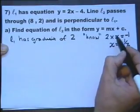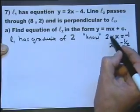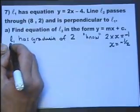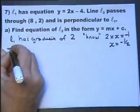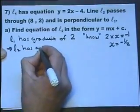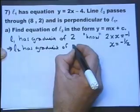A little fact that you should know. If you multiply two gradients together of two straight lines and you get minus 1, then those two lines are right angles to each other. So using that fact, we can suss out that the second line has a gradient of minus a half.